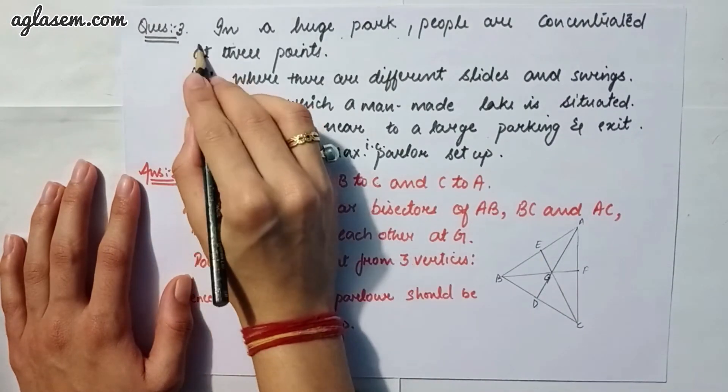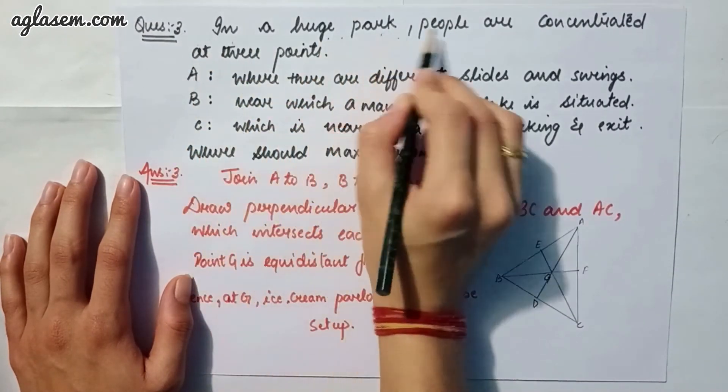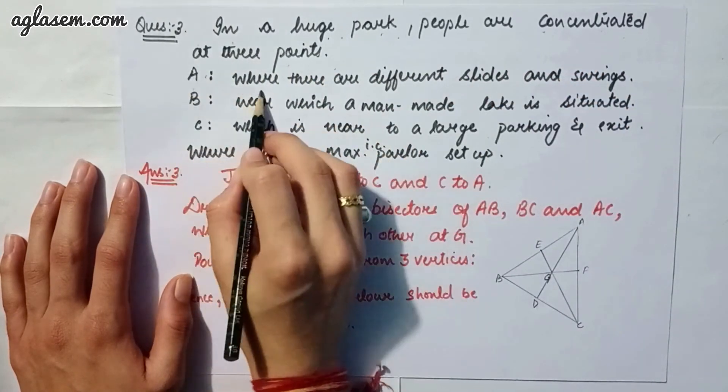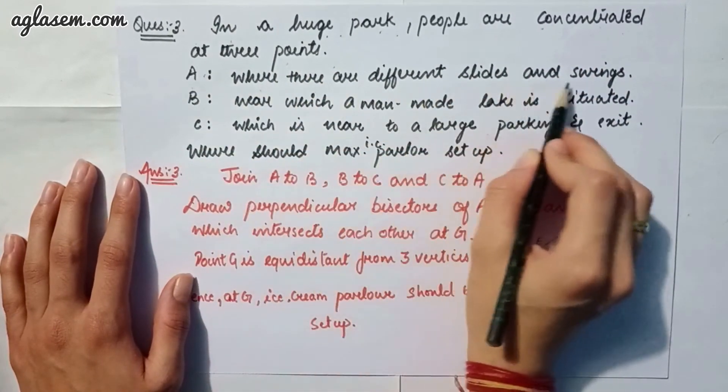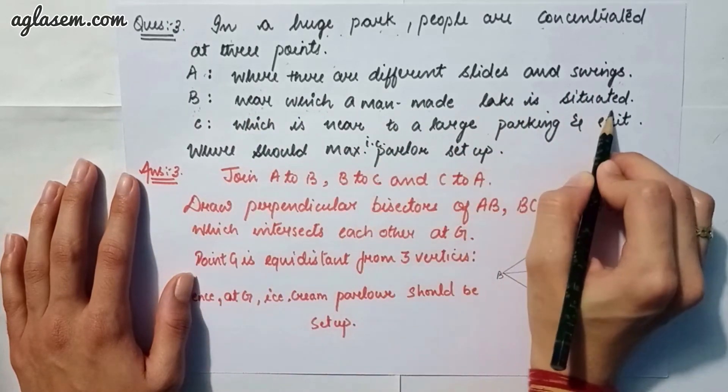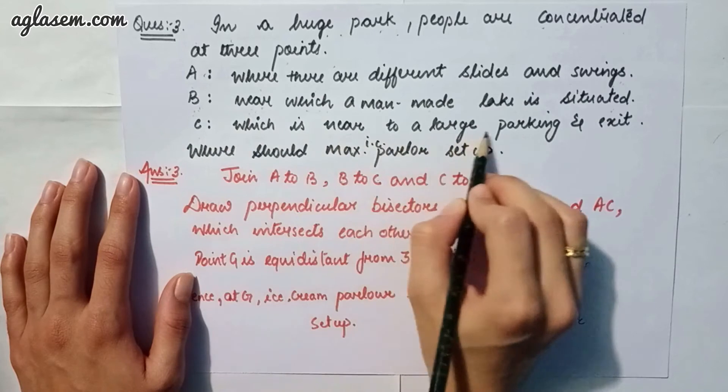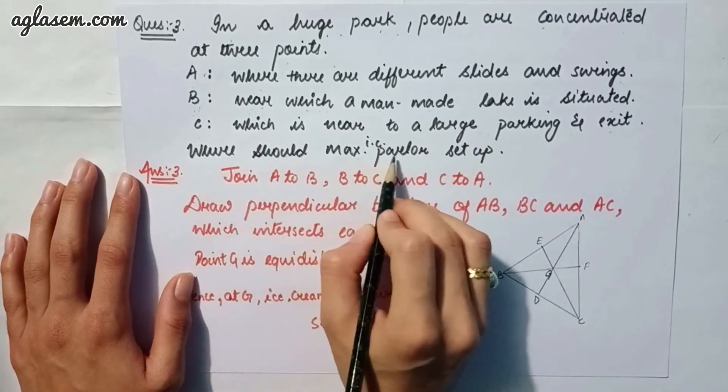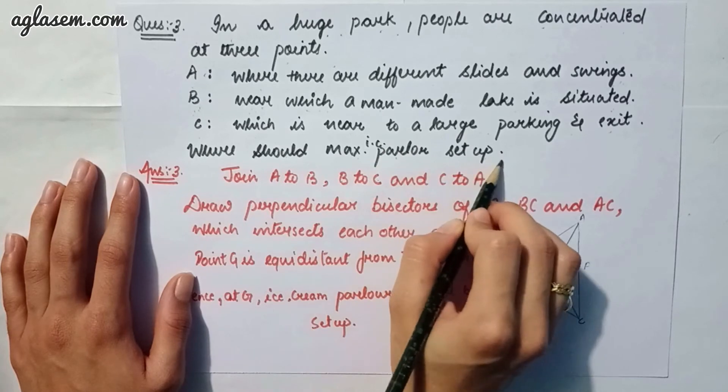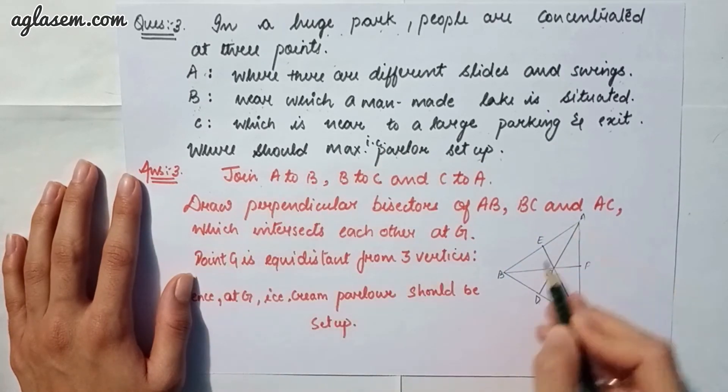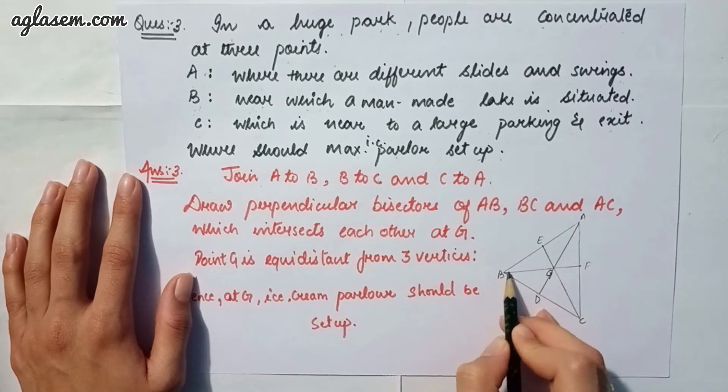Further moving to question number 3 which says: in a huge park people are concentrated at three points. A where there are different slides and swings, B near which a man-made lake is situated, C which is near to a large parking and exit. So where should an ice cream parlor be set up? So we have to join A to B, B to C, and C to A.